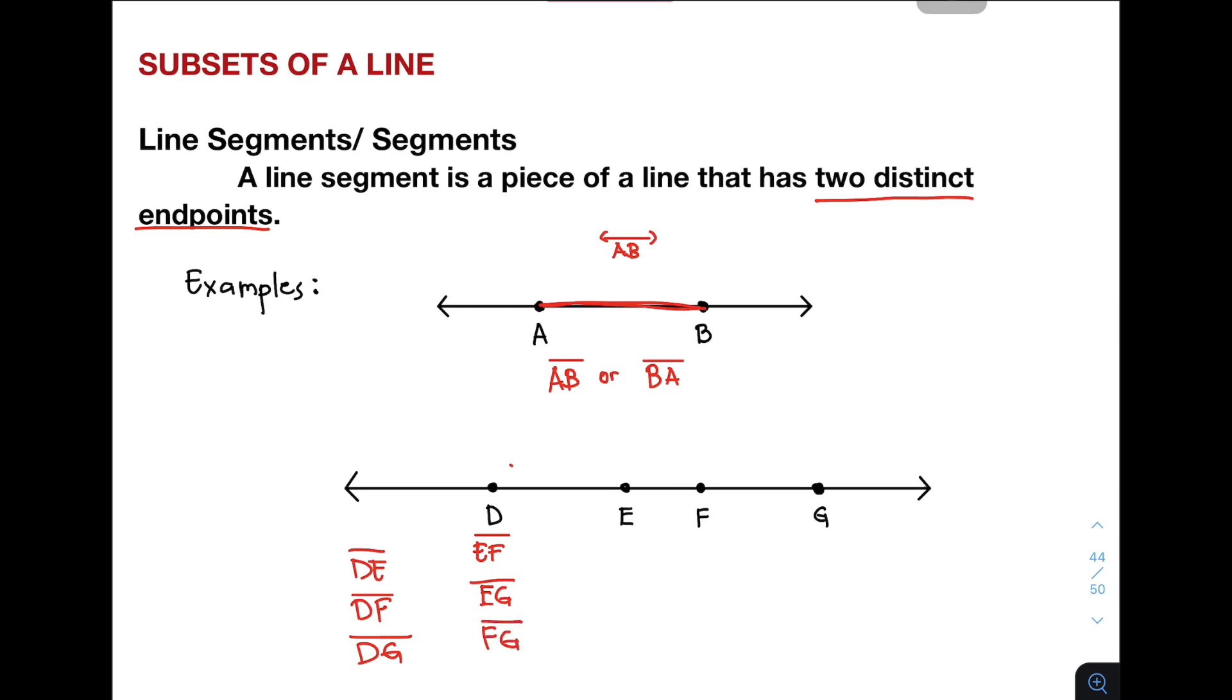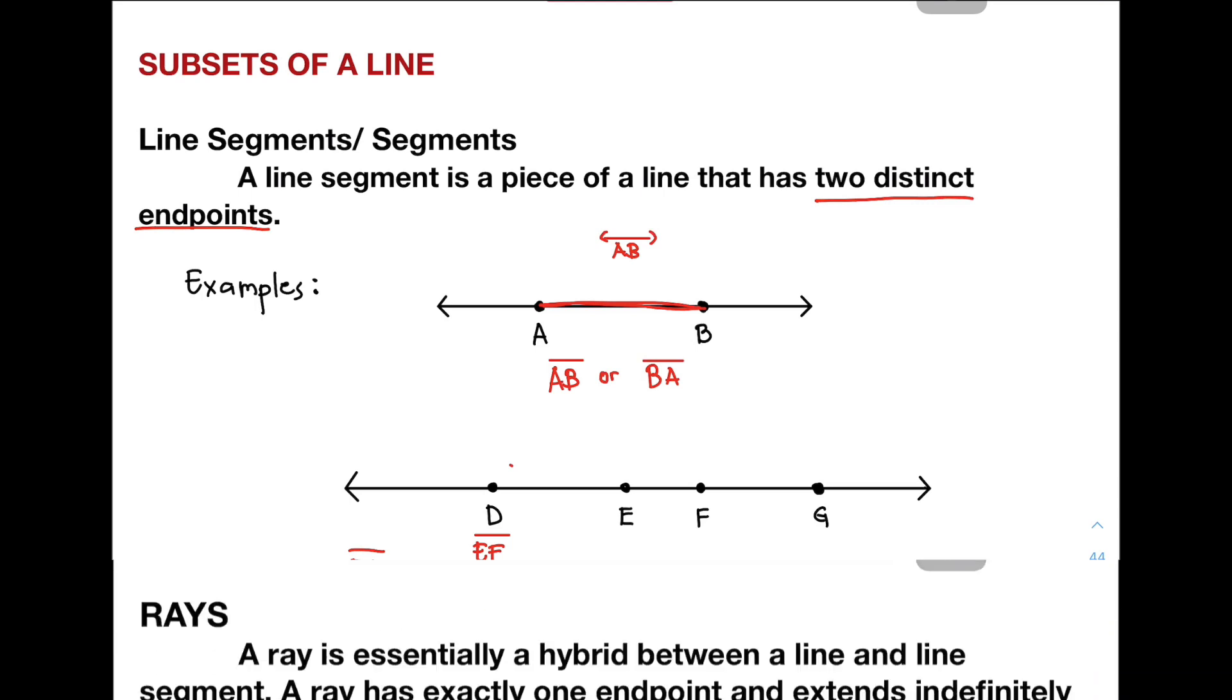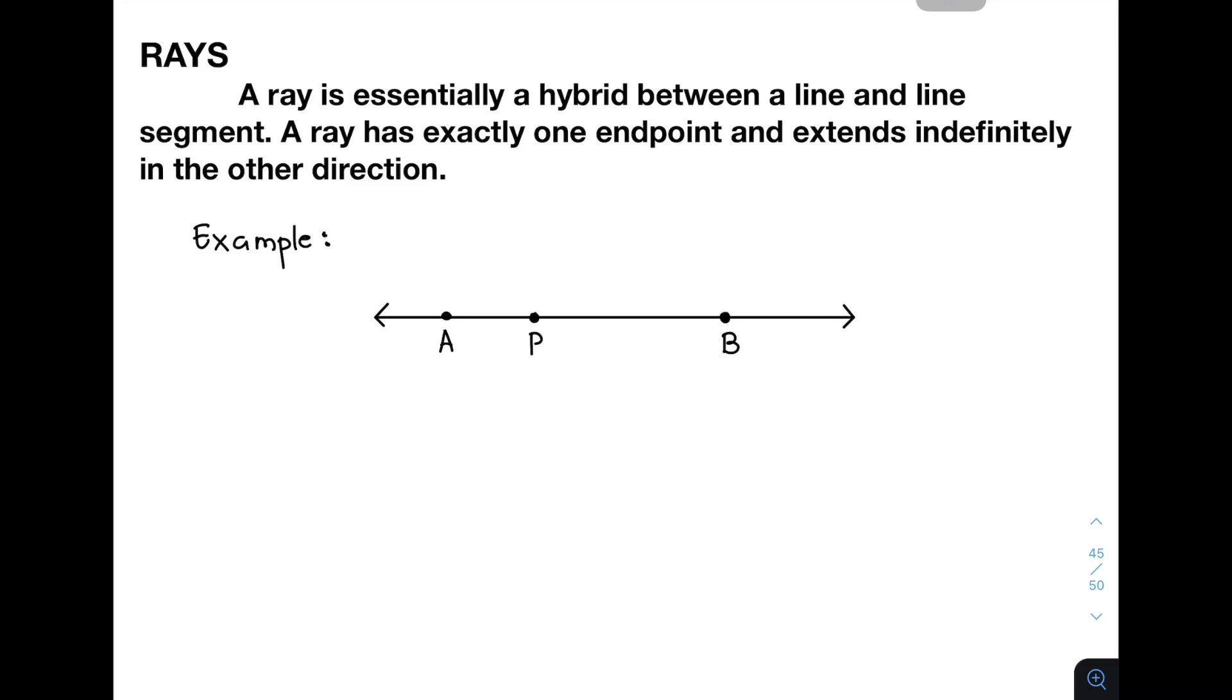I hope you understood how to define and identify the different segments on a line. When you say segment, it is a piece of a line that has two distinct endpoints. In the next part of our video, we will talk about the next subset of a line. Rays. Ray is the second subset of a line. To define ray,